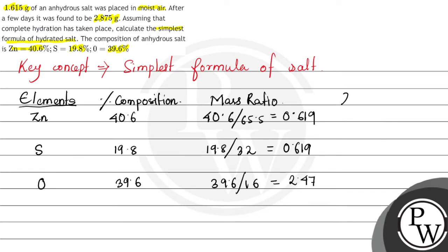Now we will find out the simplest whole number ratio. To find the simplest ratio, we divide all mass ratios by the least mass ratio, which is 0.619. So 0.619 divided by 0.619 gives us 1 for zinc. For sulfur, the simplest ratio is also 1. For oxygen, it gives us 4. From this, we can conclude that the simplest formula of the anhydrous salt is ZnSO4.